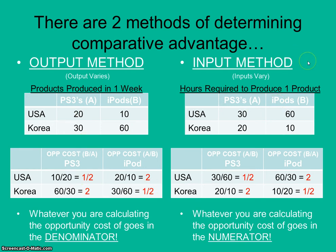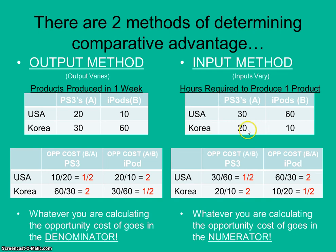Sometimes the data is presented where the inputs to production vary — for example, how many hours it takes to produce one unit. It might take the US 30 hours to produce a PS3 and 60 hours to produce an iPod, while it takes Korea only 20 hours to produce a PS3 and 10 hours to produce an iPod. When inputs are what's varying, look for who can produce the good with fewer inputs to find the absolute advantage — here Korea has the absolute advantage in both. When calculating comparative advantage with varying inputs, you pull the number under rather than over to find your fractions and reduce them.